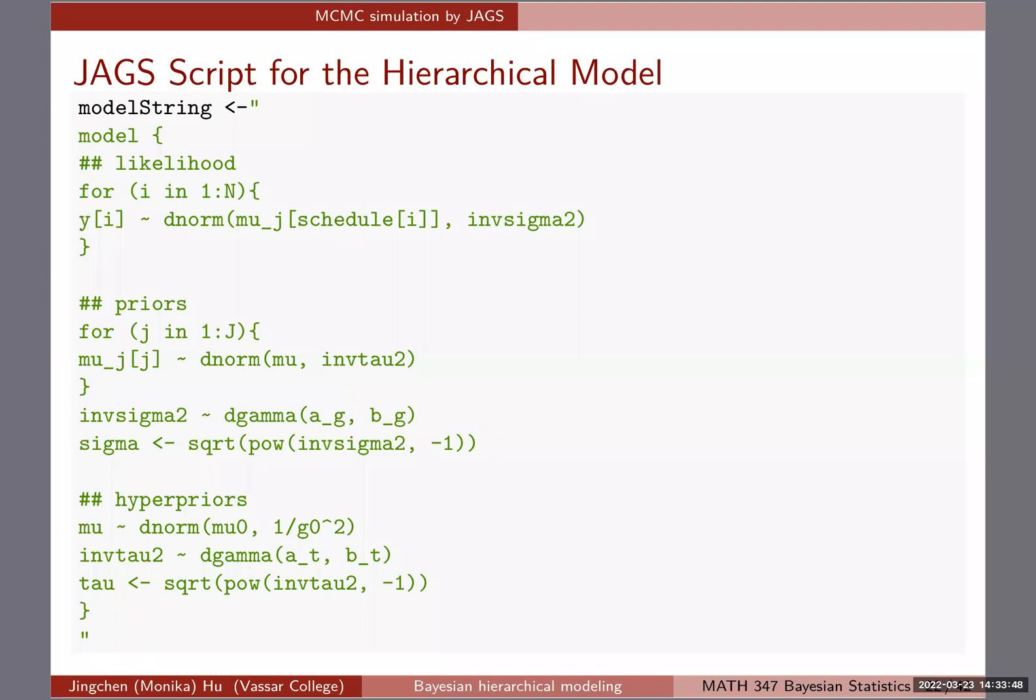You have the sampling model or the likelihood section. You also have the priors section. And sometimes you also have the hyperprior sections, depending on whether you have hyperpriors or not. So with that in mind, there are many details going on, like writing the loops and all that. So before we look at it in detail together, let's use the breakout room for about two minutes.